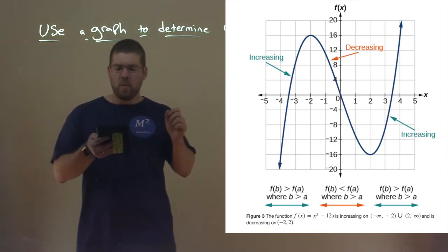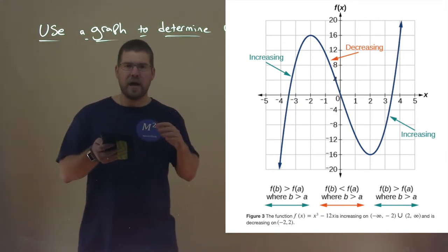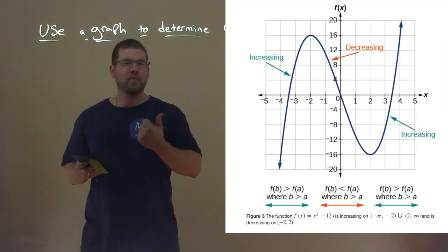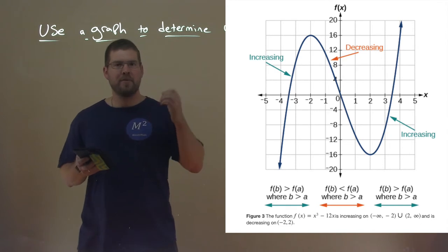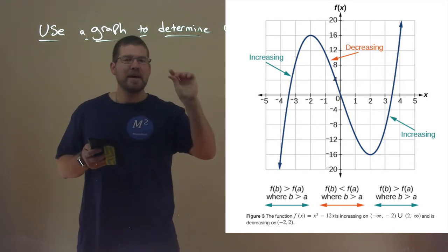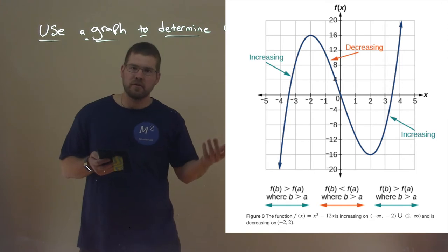What we're basically trying to do, it says it right here, is that it's increasing where f of b is greater than f of a, where b is greater than a. So really what it's saying is, it's increasing at a point that as we're going to the right, if the y value just to the right of it is a little bit higher than the one before, then we're still increasing. Vice versa, we go decreasing.